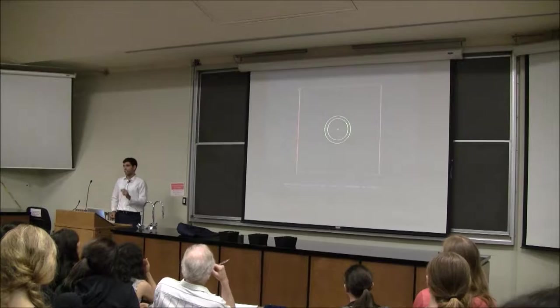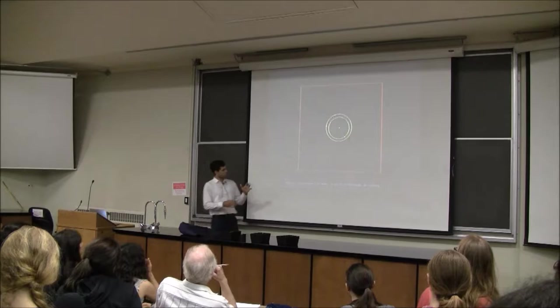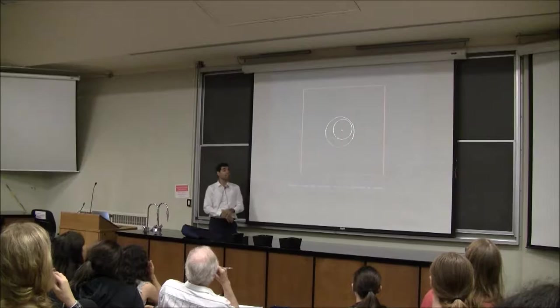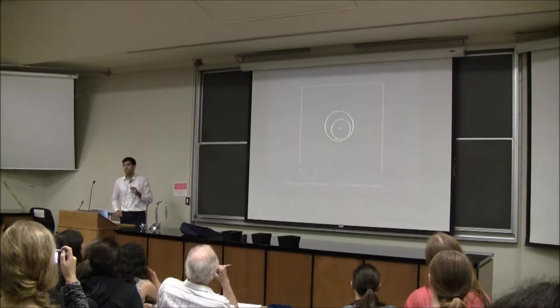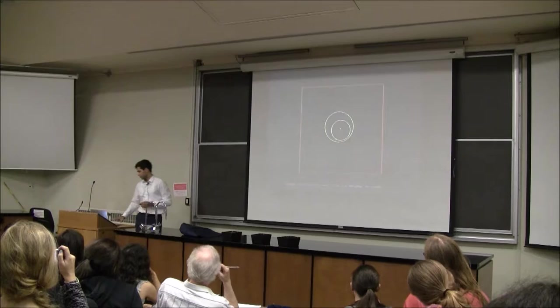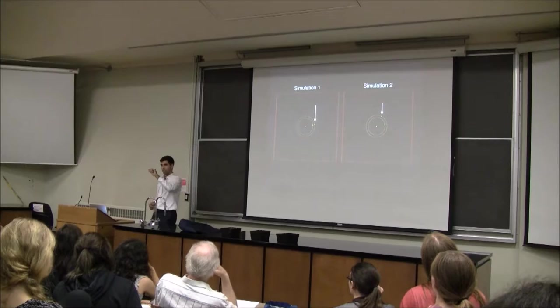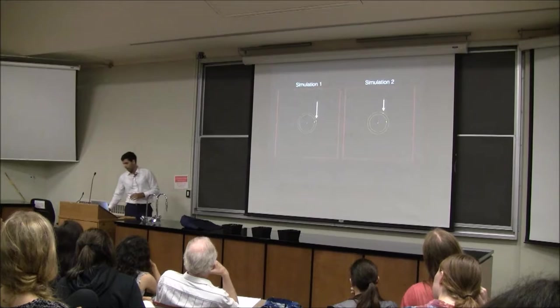Now we watch the second simulation, where I changed the initial conditions just a little bit. It starts off not doing too much, but then all of a sudden this really interesting behavior starts happening. They're jumping around between each other — you can see all these very interesting interactions, almost like they're dancing with one another. This is chaos embodied. What was the difference? All I did was take the initial position of that planet and move it just a little bit, without changing the masses or positions, and we get that drastically different behavior.